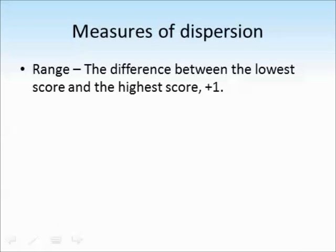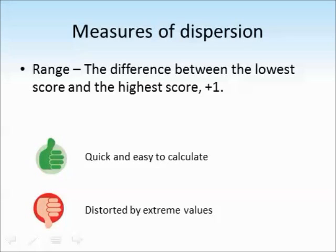Measures of dispersion show how spread out the scores in a data set are. And the easiest way to do that is to use the range, which is the difference between the lowest score and the highest score, plus one. This is very quick and easy to calculate. But it can be distorted by extreme values.